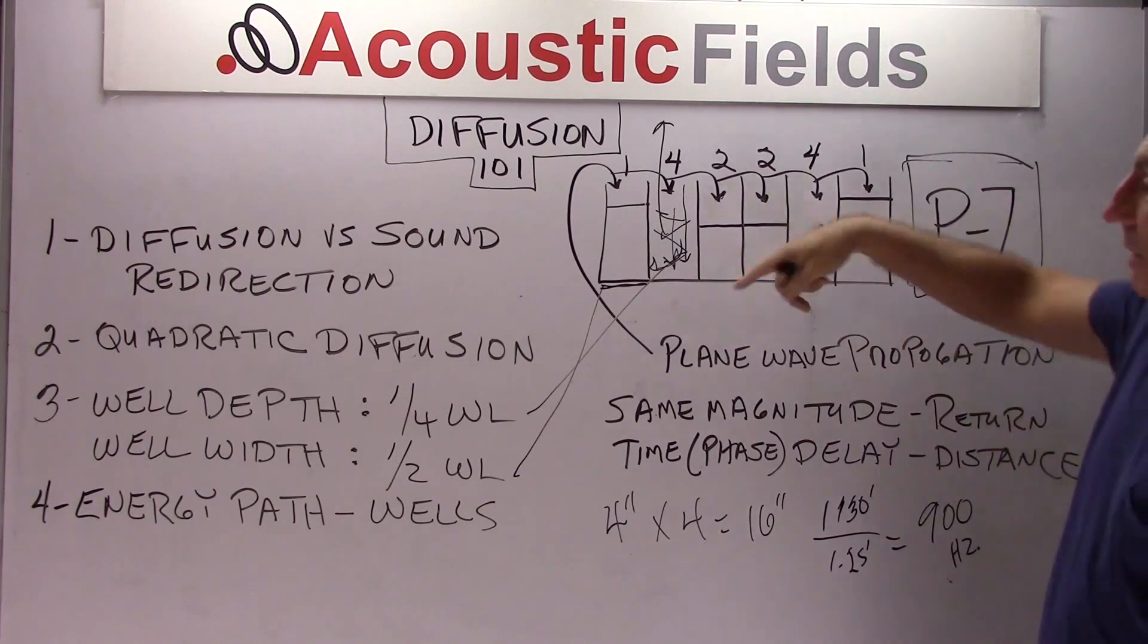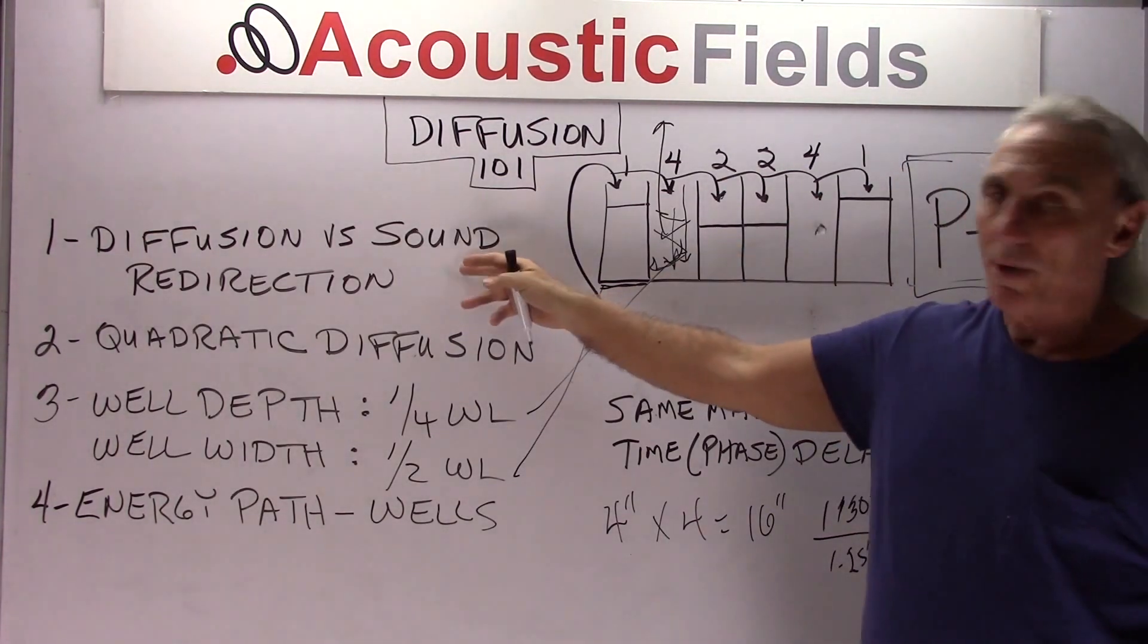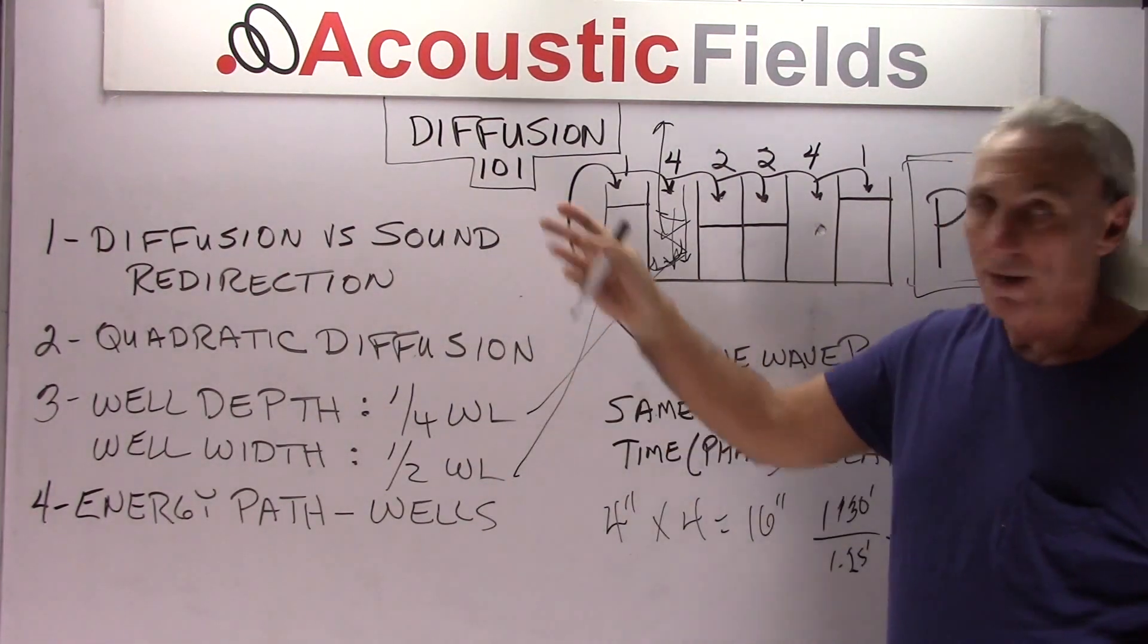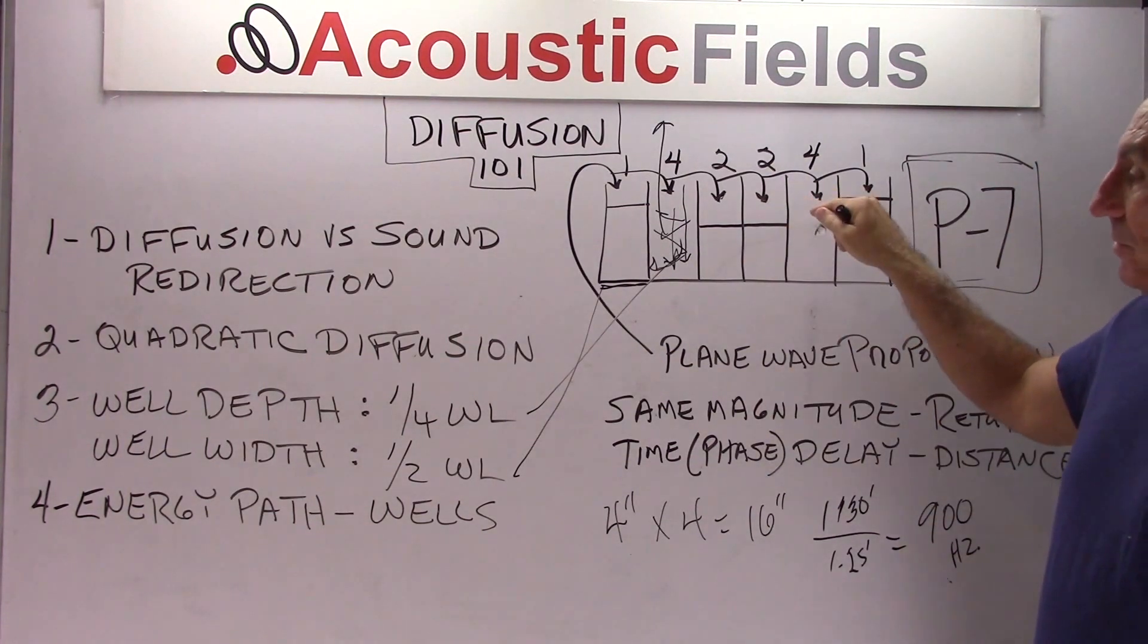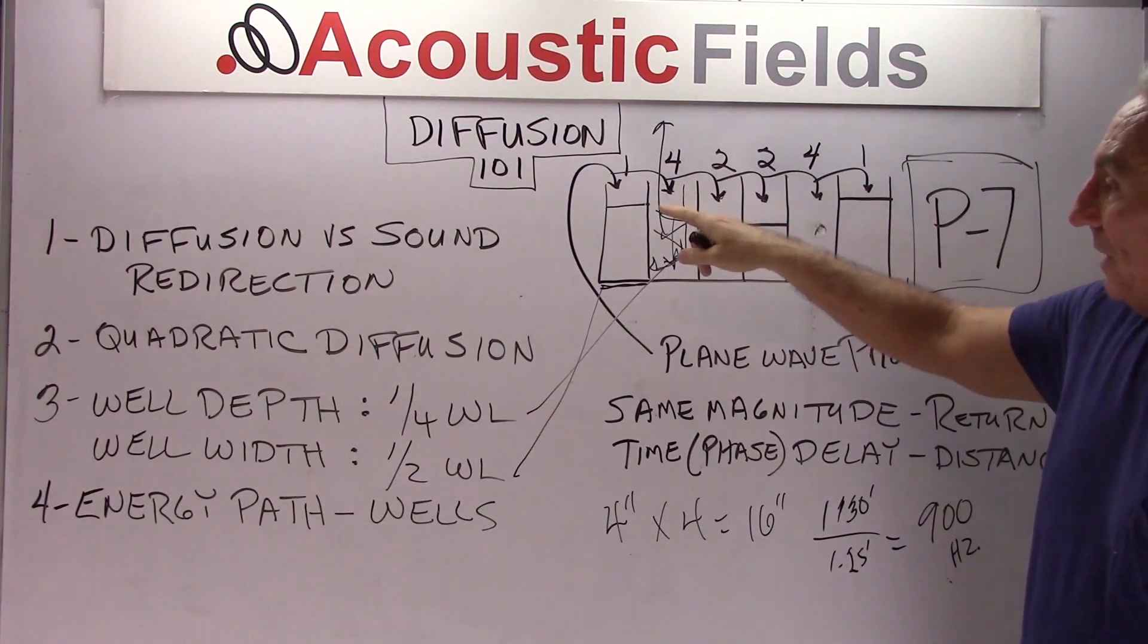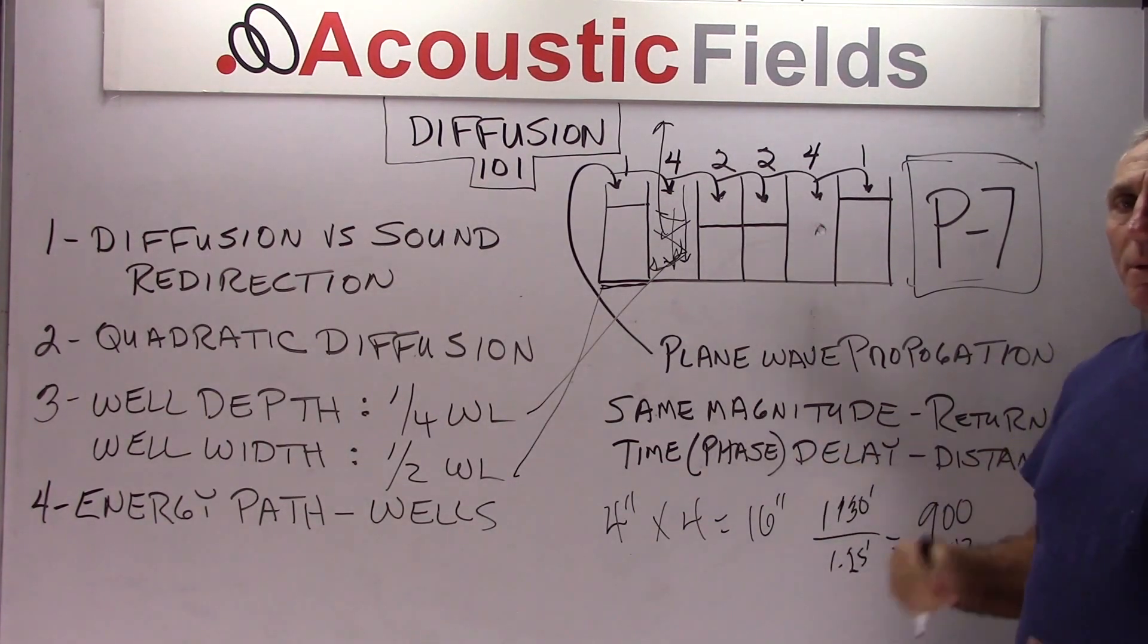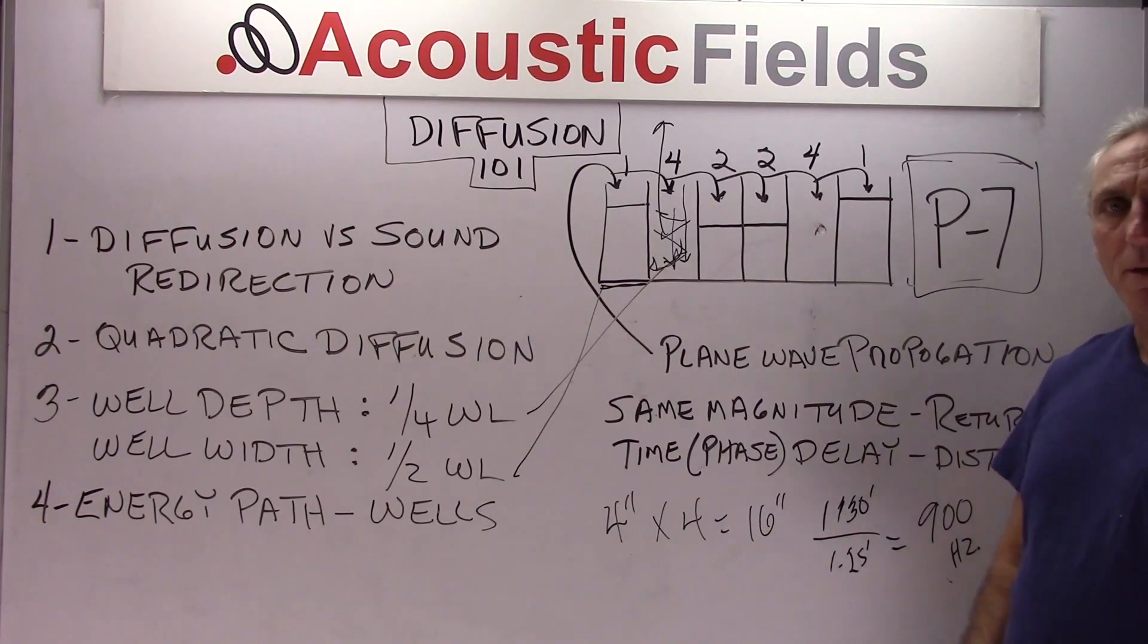So in summary, it's a series of wells or troughs. It's a true diffuser and we have to distinguish between redirected or redirection and actual diffusion. Then we have quadratic diffusion which is the true diffuser with the wells based on half and quarter wavelength. In the next series, we'll talk a little bit about the criteria that a true diffuser has to have. Thank you.